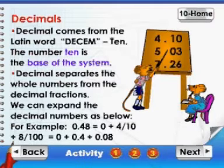We can expand the decimal numbers as below. For example, 0.48 is equal to 0 plus 4 by 10 plus 8 by 100, which is equal to 0 plus 0.4 plus 0.08.